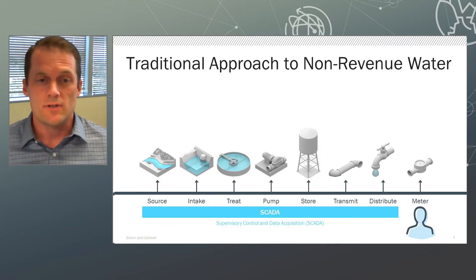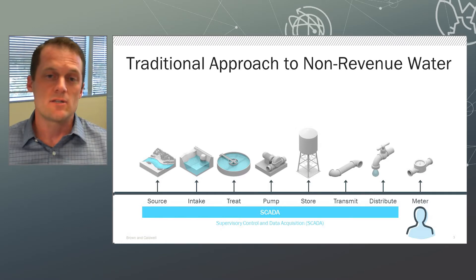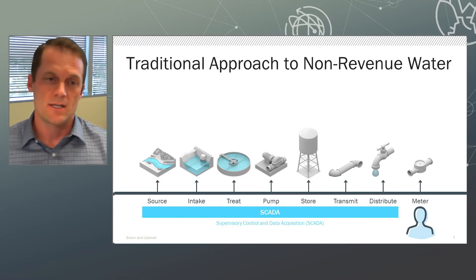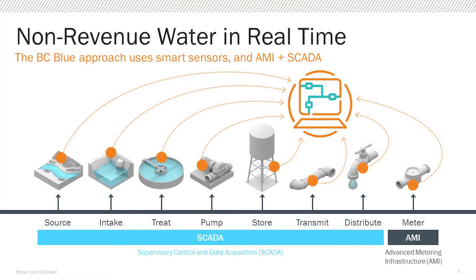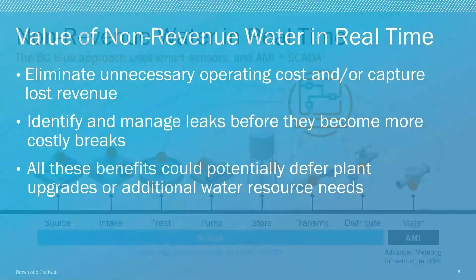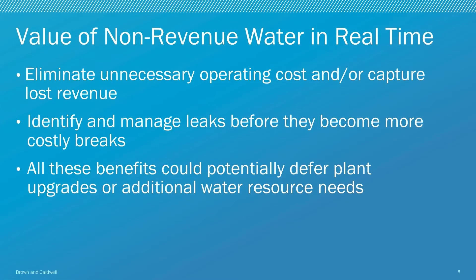With the propagation of advanced meter infrastructure — AMI — throughout the water industry, many utilities now have metered consumption available in real time. And if we integrate that real-time data with the other real-time data sources throughout the delivery cycle, we can monitor non-revenue water in real-time. This allows us to identify and respond to those changes in non-revenue water as they happen. At that point, our list of challenges with non-revenue water really become opportunities.